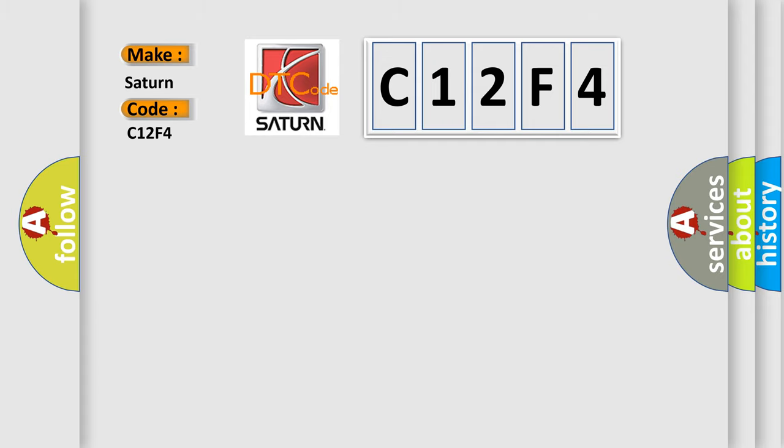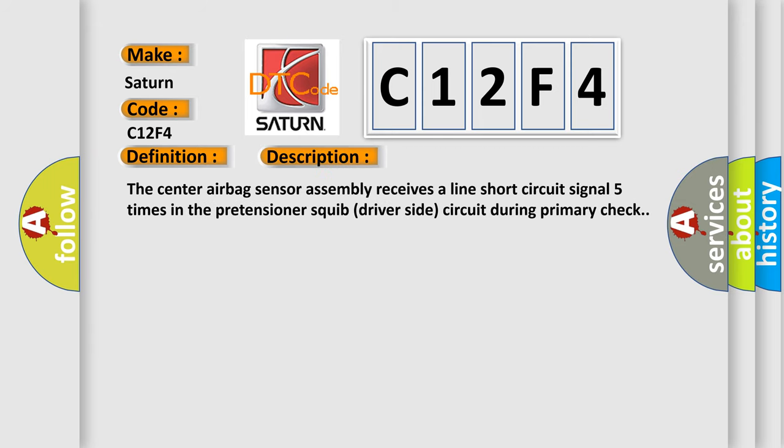The basic definition is short in front driver-side pretensioner-squib circuit. And now this is a short description of this DTC code. The center airbag sensor assembly receives a line short-circuit signal five times in the pretensioner-squib driver-side circuit during primary check.